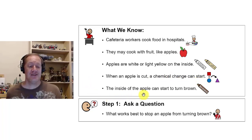When an apple is cut, a chemical change can start. The inside of an apple can start to turn brown. Now a chemical change is something that cannot be undone. Think of if you have a fireplace and you're burning a piece of wood, that is a chemical change. You cannot put that wood back together again.